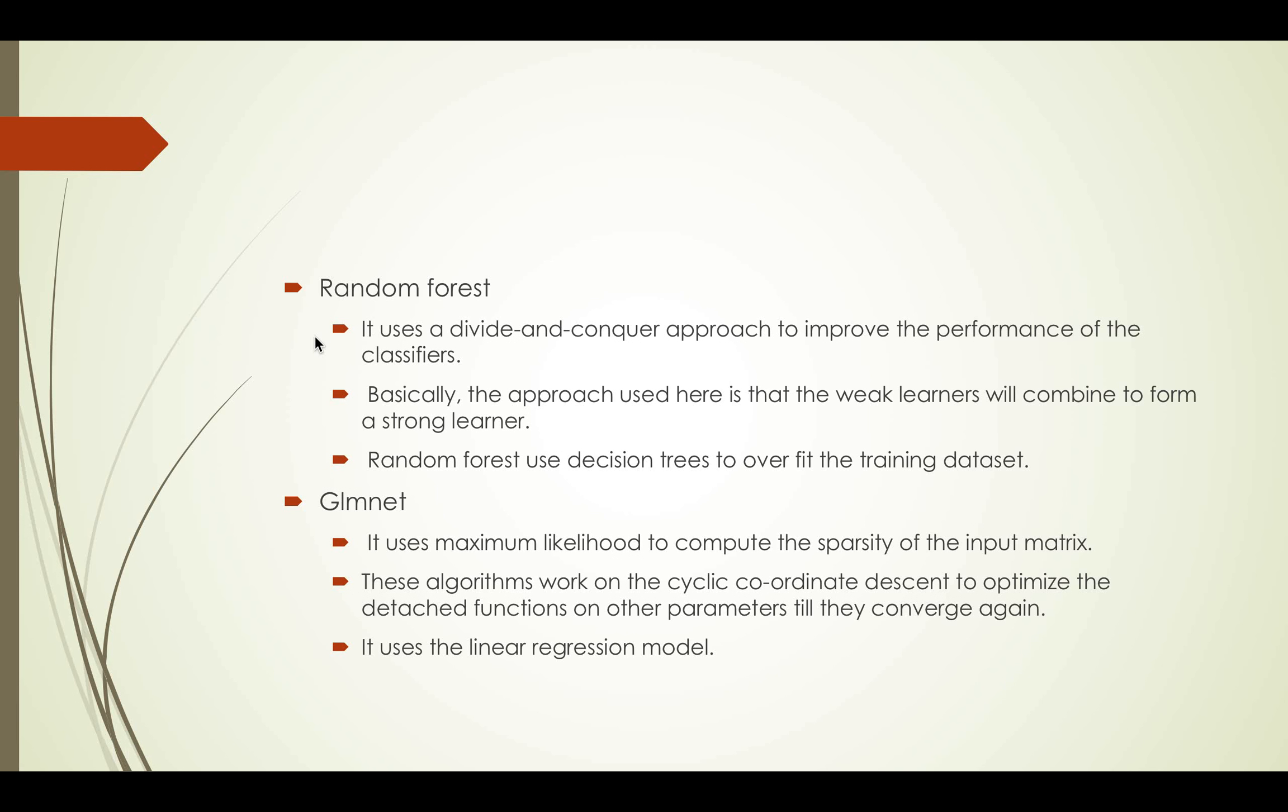Random Forest uses decision trees to overfit the training dataset. It uses maximum likelihood to compute the sparsity of the input matrix. These algorithms work on the cyclic coordinate descent to optimize the detached functions on other parameters till they converge again. It uses the linear regression model.